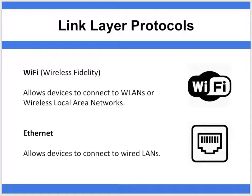Wireless fidelity, or Wi-Fi, allows you to connect a device to a network using a non-physical form and will allow you to connect to wireless local area networks, whereas Ethernet allows devices to be connected to wired local area networks.